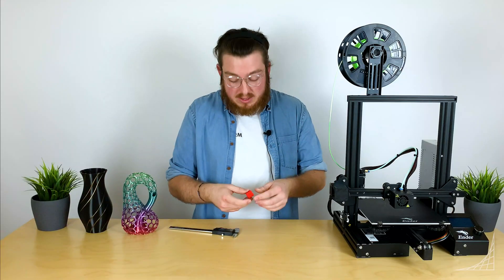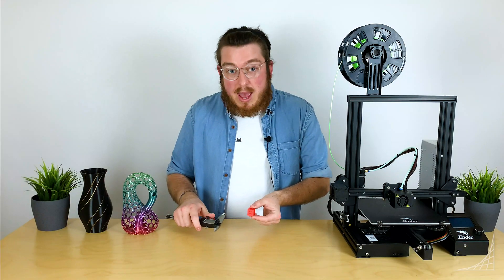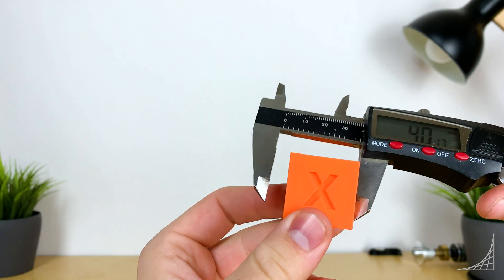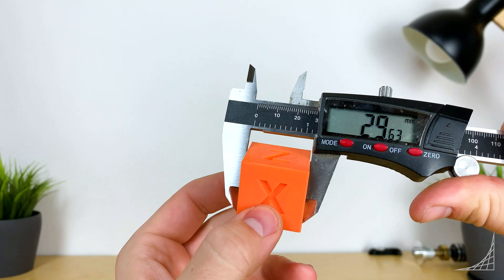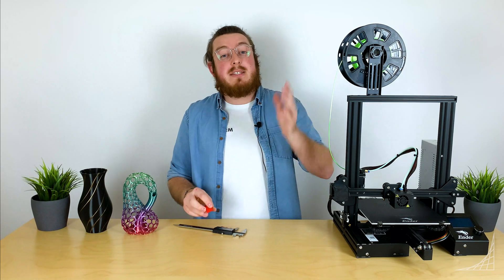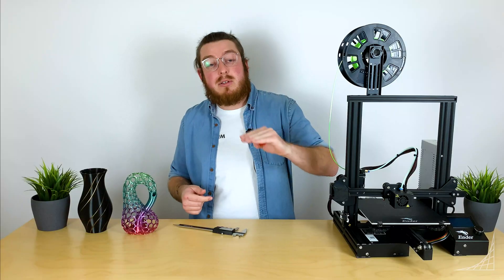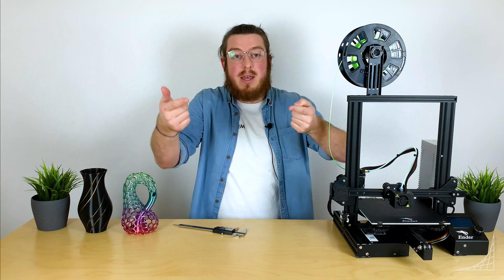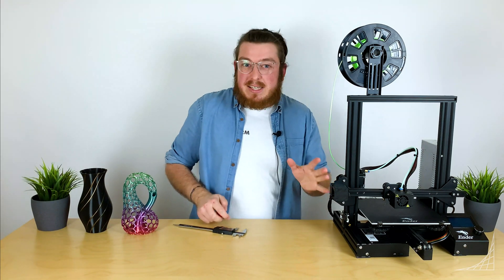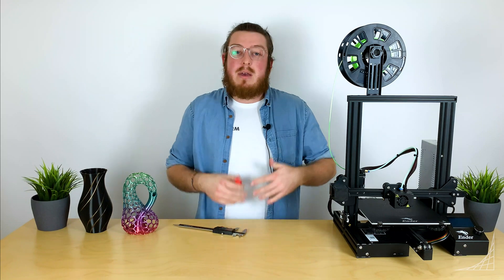So for example, if I have a calibration cube like this and I want to measure the x-axis, then I can go across. I'm expecting 20 millimeters, but I'm actually getting just a little bit under, which means that my steps per millimeter isn't actually moving it far enough. So by dividing it by a smaller number, it's actually going to give me a large number off the top. So instead of moving 80 steps per millimeter, it may move it 80.5.